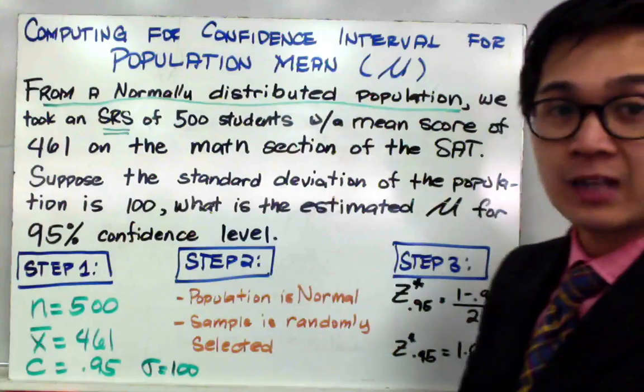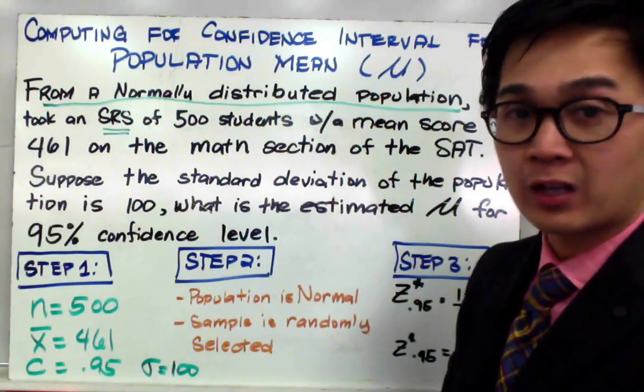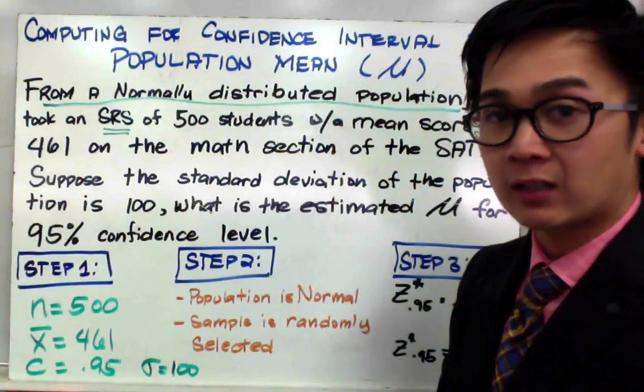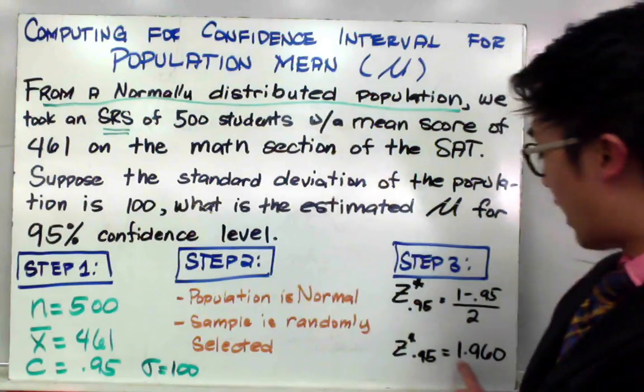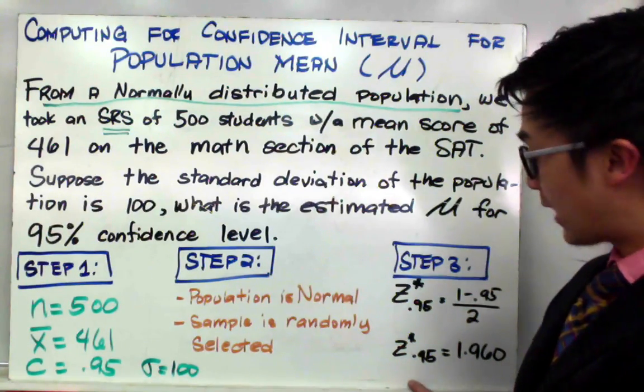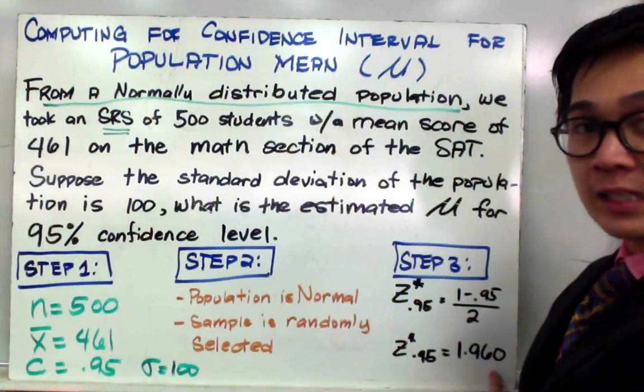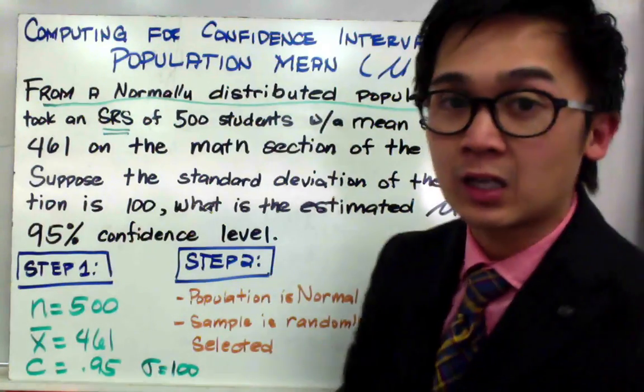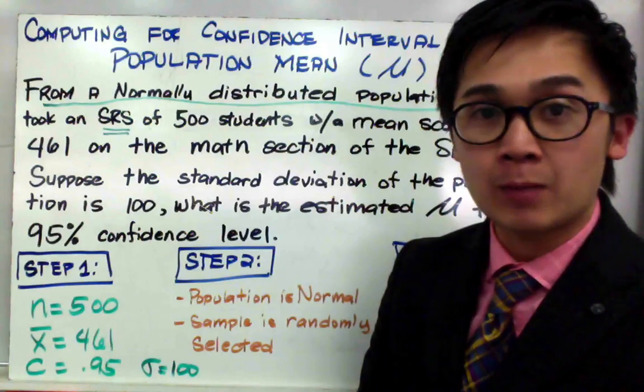This will give us a value and that value is needed to be found on your Z table or your calculator. In your calculator, just push inverse normal and you'll find 1.960. So the Z star for 0.95 is equal to 1.960, which is needed in the formula in finding the confidence interval of your population mean. And that will be our step number four, our statistical work in finding the range of values that will estimate our population mean.